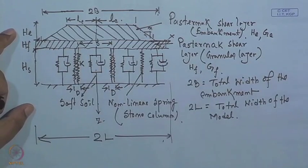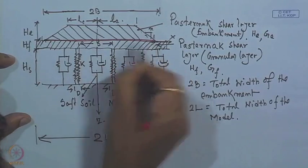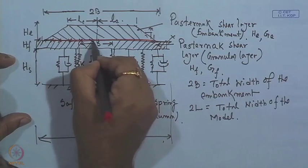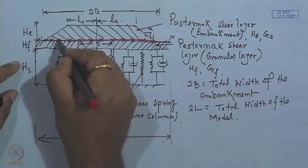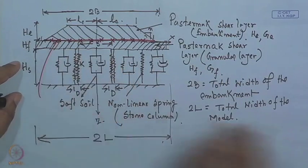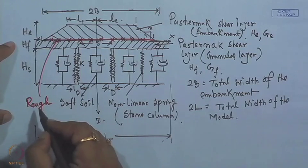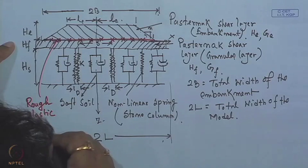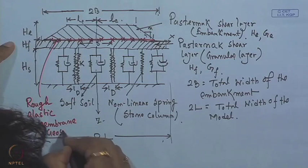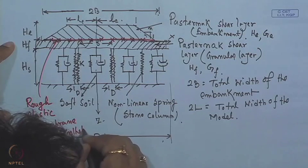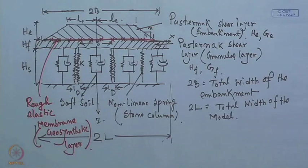If we consider a reinforcement layer, it is placed at the interface between the embankment and the granular layer. This geosynthetic layer is modeled by a rough elastic membrane.